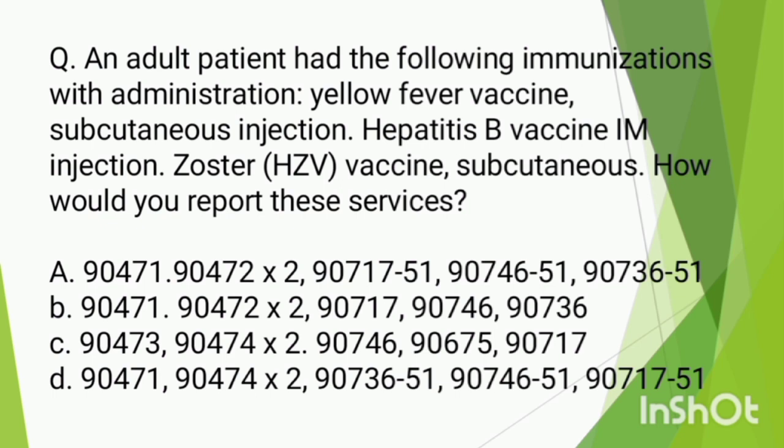The first question: An adult patient had the following immunizations with administration — Yellow Fever Vaccine subcutaneous injection, Hepatitis B Vaccine intramuscular injection, and Zoster HZV Vaccine subcutaneous injection. How would you report these services? There are three vaccines administered.